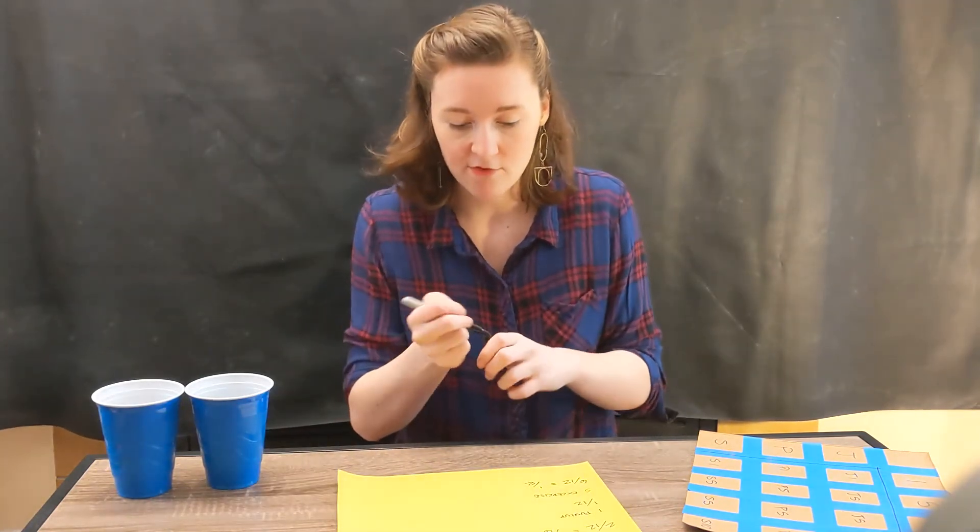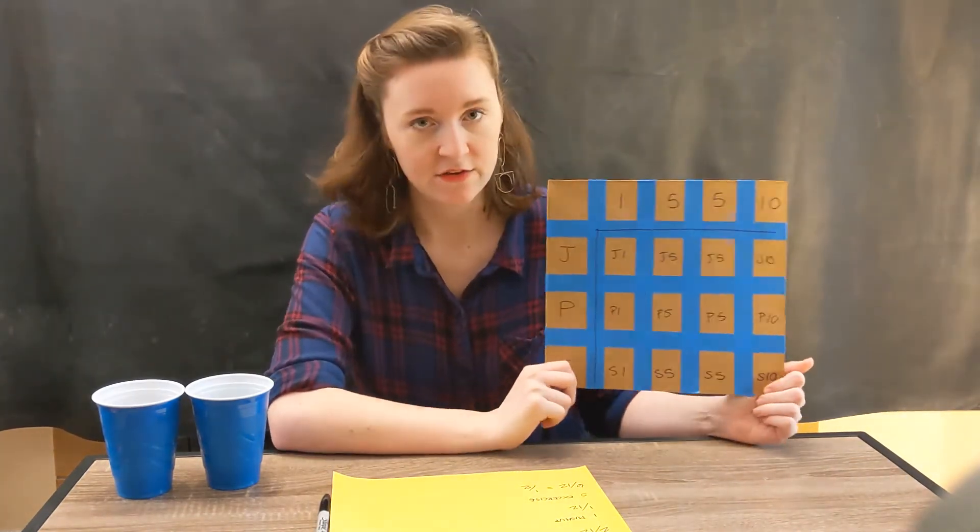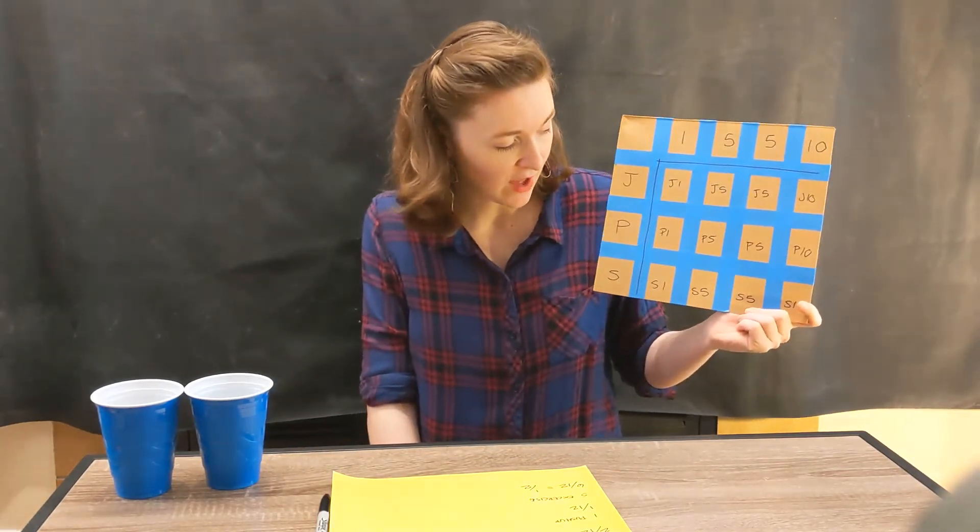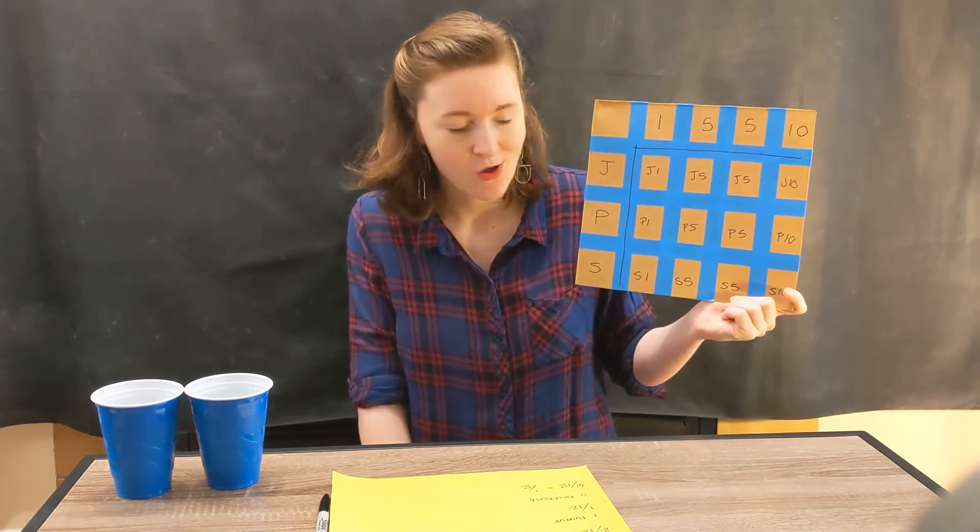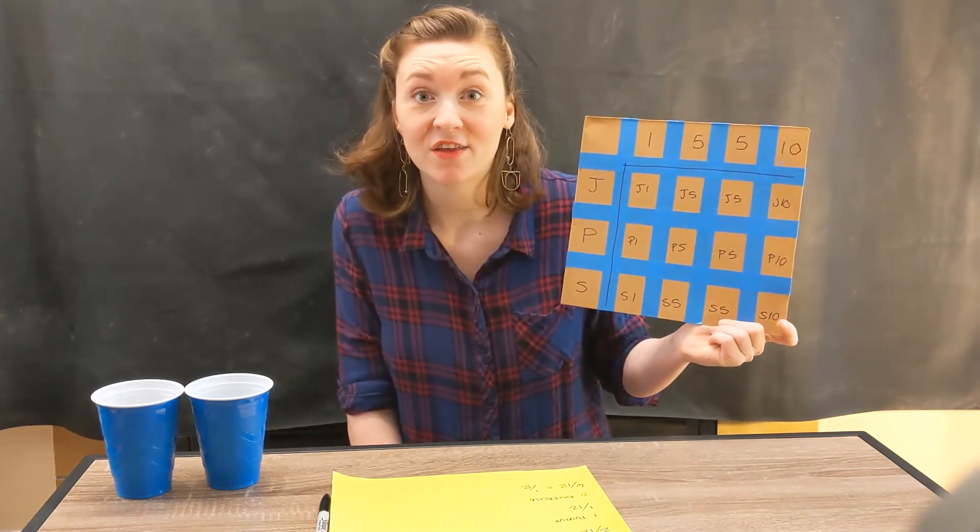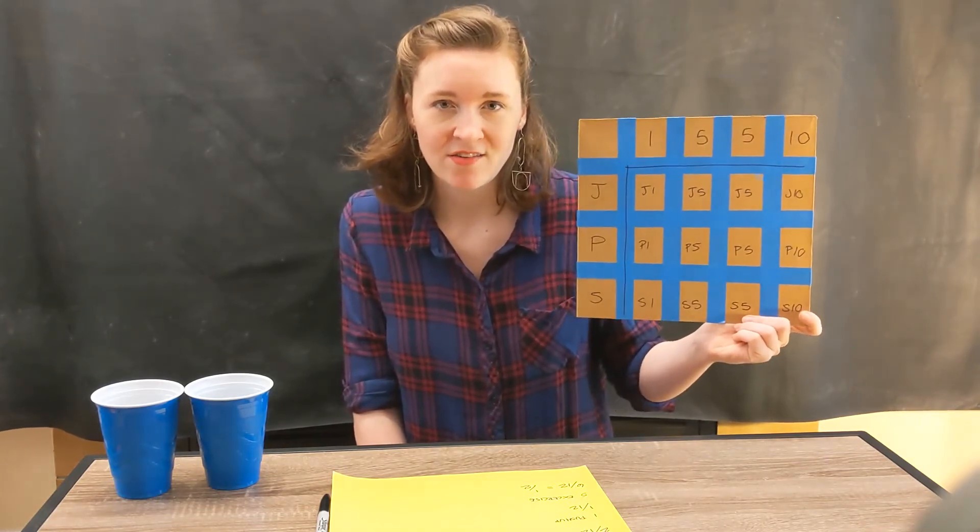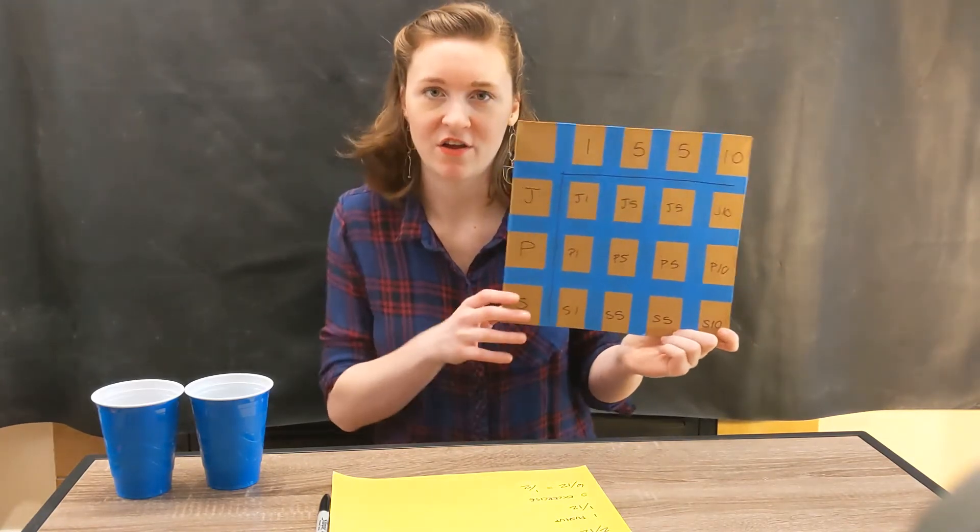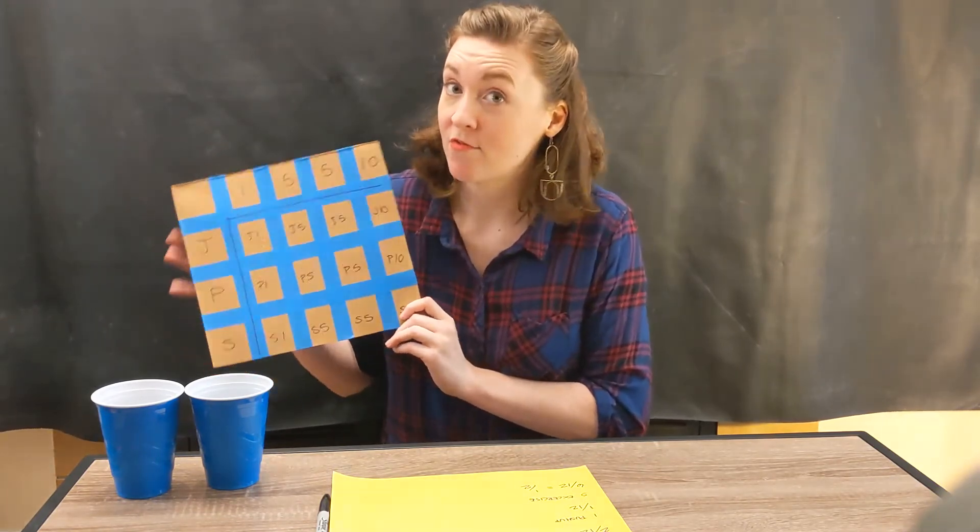So now that we have some of our probabilities figured out, see what other questions you can answer with this chart. I'll give you a few challenges. What's the likelihood that you'll have to do one sit-up? Go ahead and try and figure that out. What's the likelihood that you'll have to do ten of an exercise? How many outcomes have ten in them? And what percentage is that? Go ahead and see if you can figure that out. And then see if you can come up with your own question. Figure out the likelihood of something that we haven't talked about.